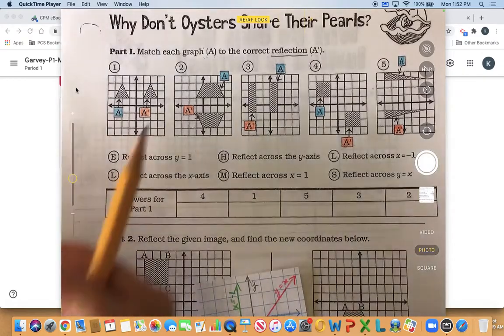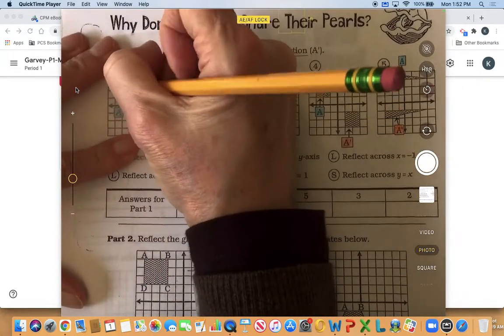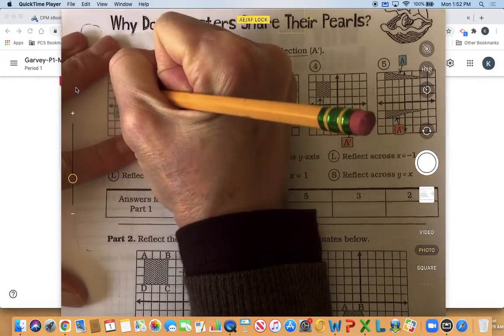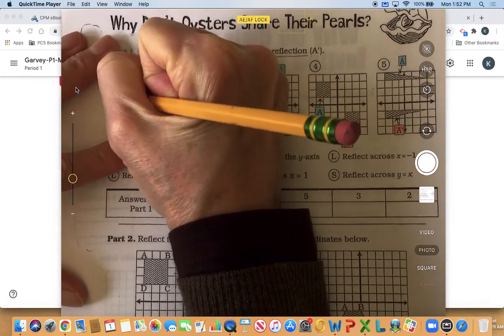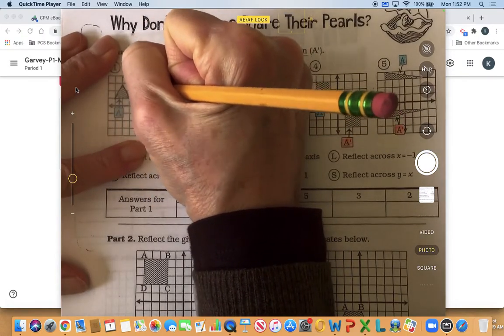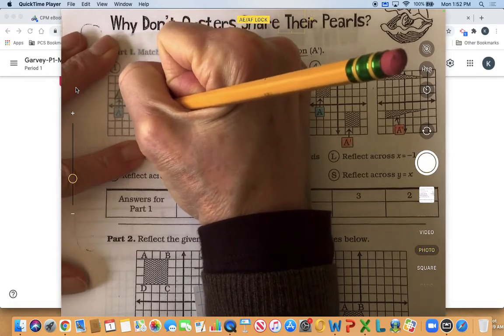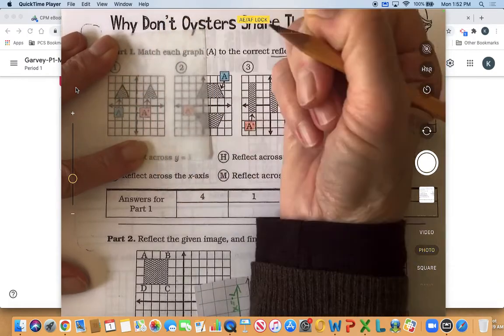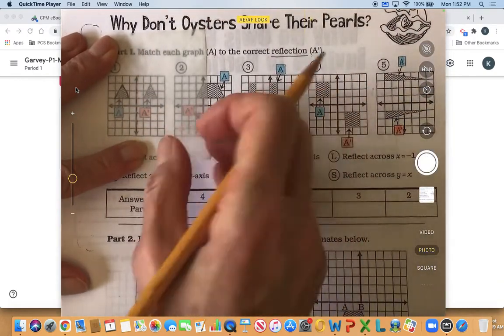And we can check that because we can use some patty paper and draw the original shape and then we can draw the line of reflection and I like to do that with a dotted line.